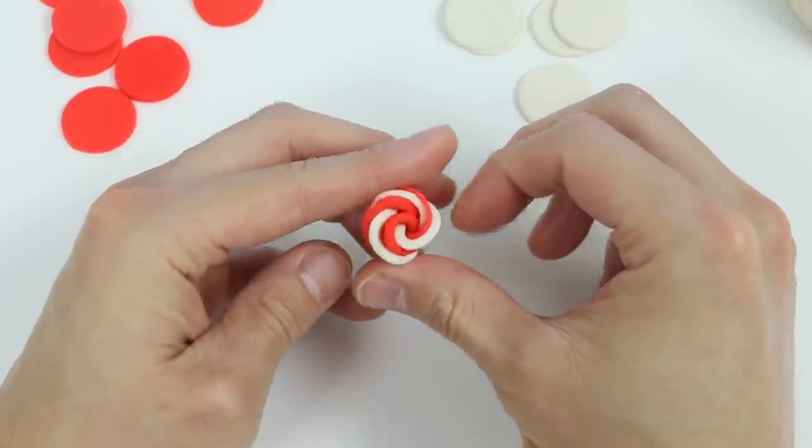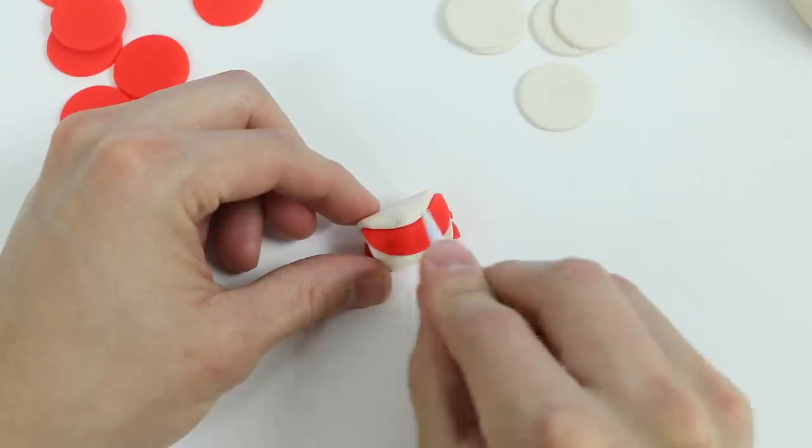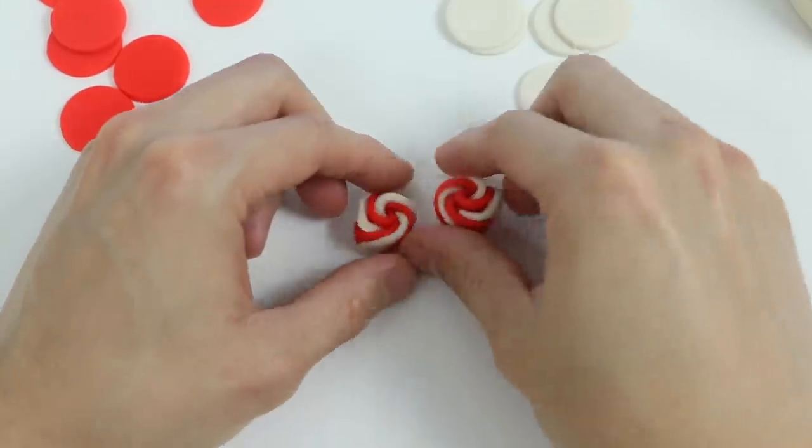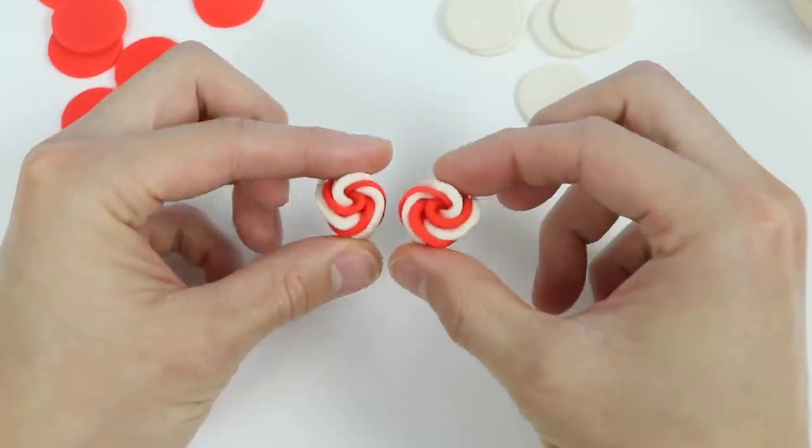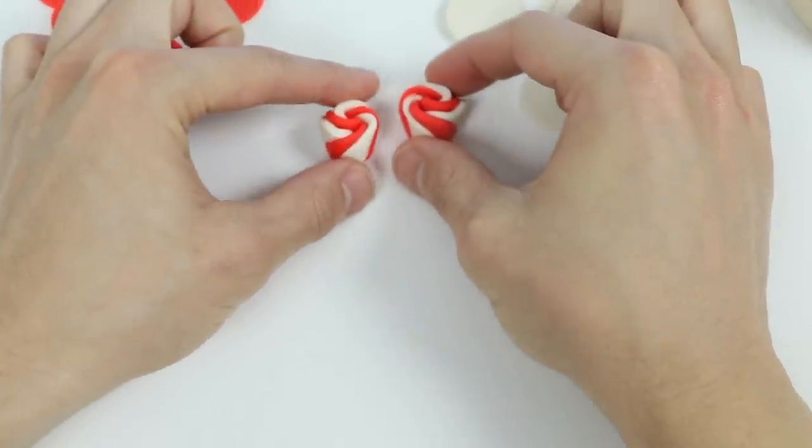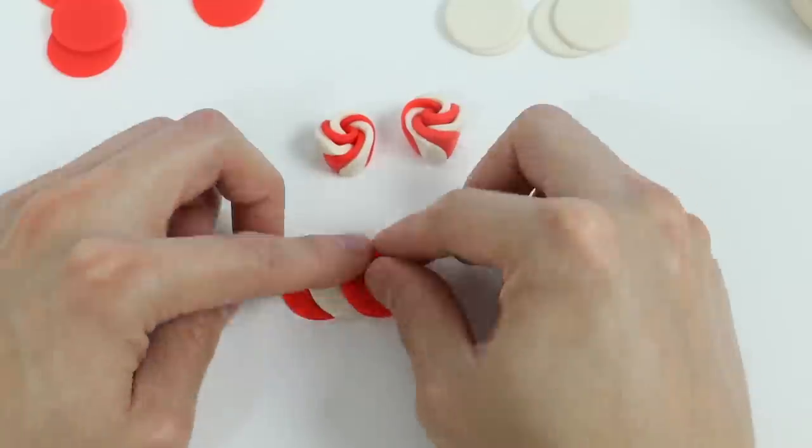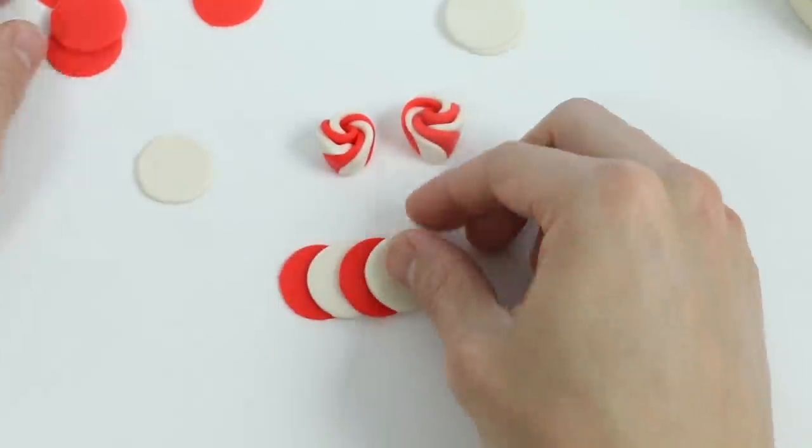Isn't that pretty? Now let's cut this in half. Perfect! Now we have two flower decorations. Now let's make a few more. Sit back and relax while I do this part.